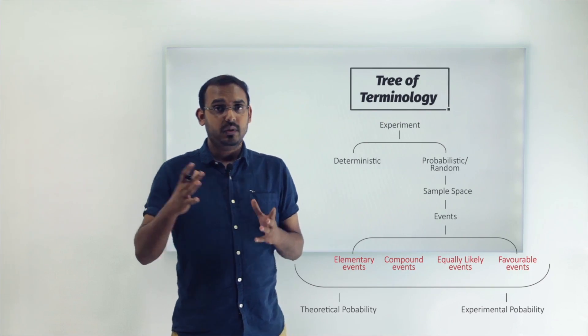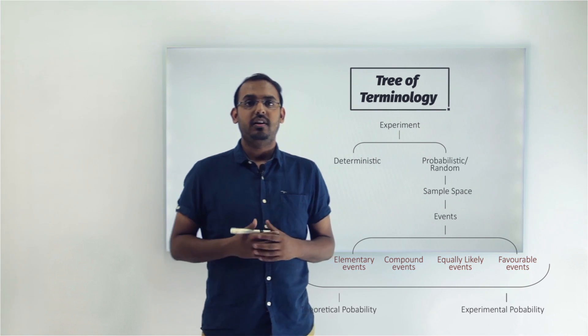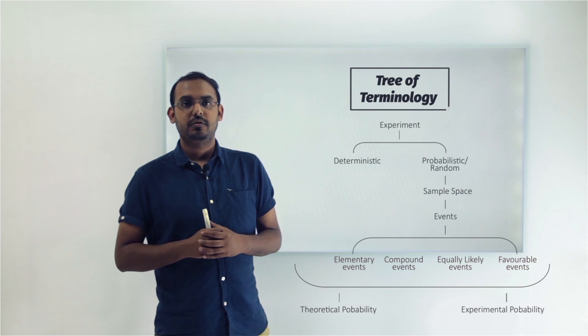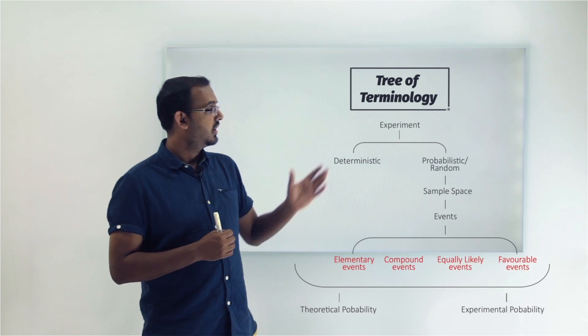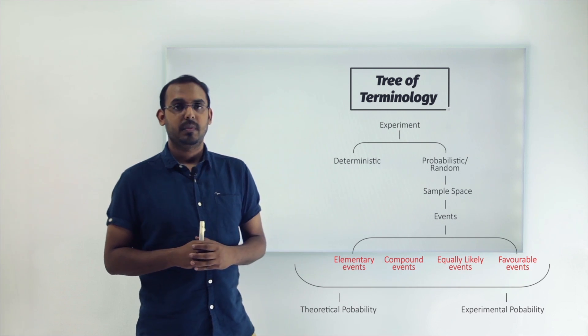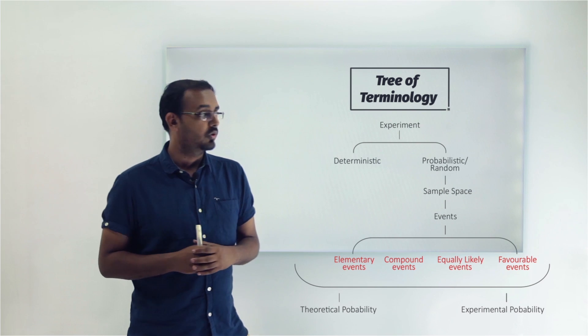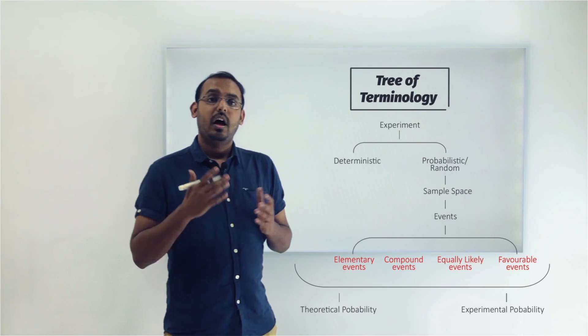In this video we looked at the concept of events and what events mean in the context of studying probability. Then we studied the four different kinds of events: elementary events, compound events, favorable events, and equally likely events. In the next video we'll talk about how we calculate probability and the different ways in which probability is calculated. See you in the next lecture.